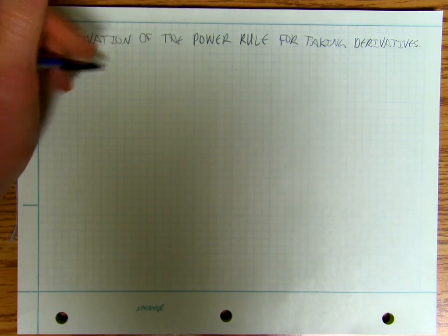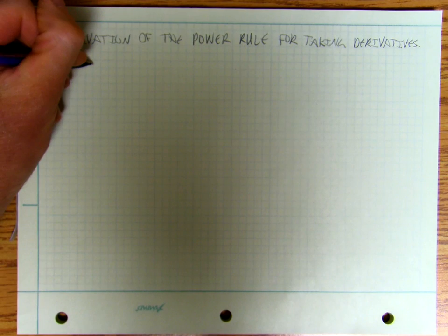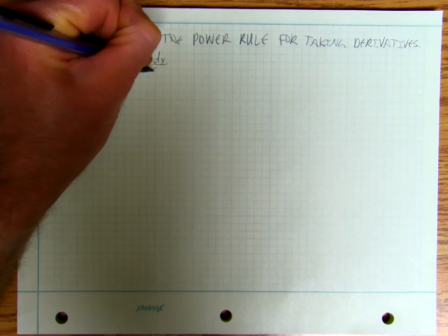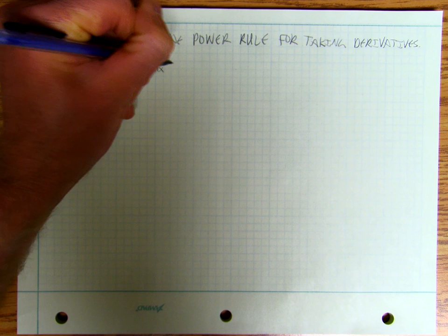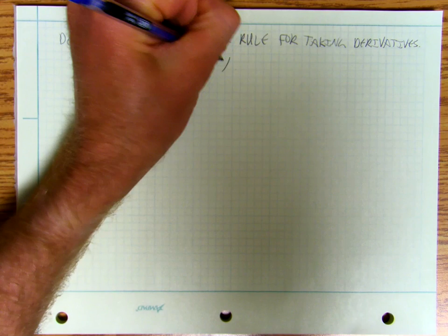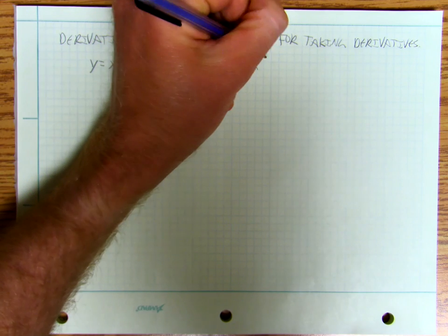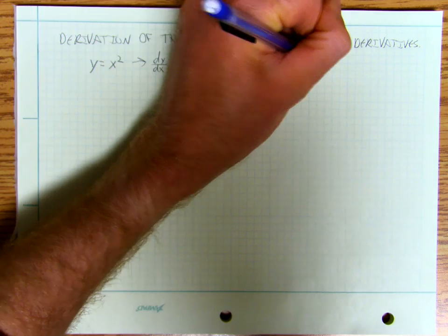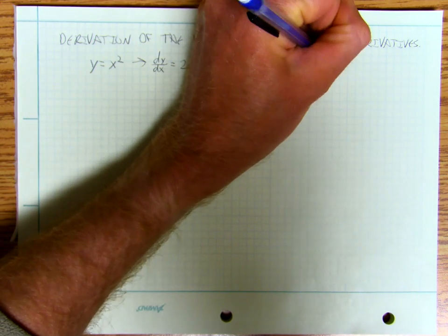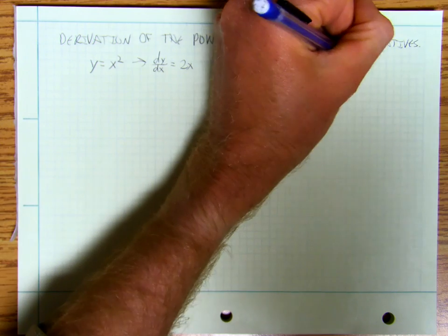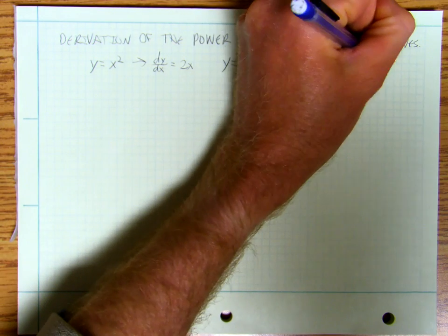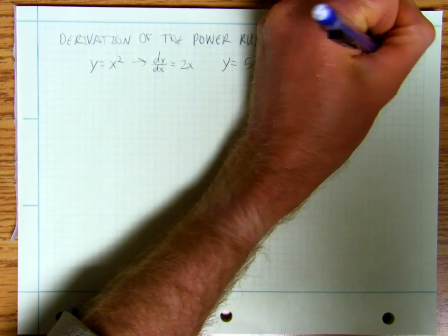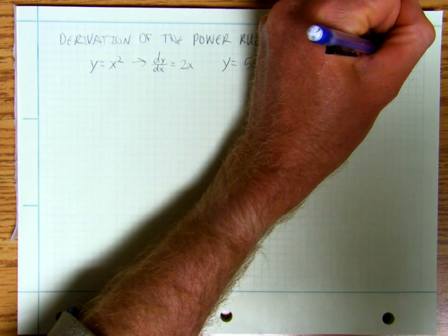By the time you're watching this video, you should know that if y equals x squared, then the derivative dy/dx is equal to 2x. And if y equals 5x to the fifth plus 3x to the seventh, then the derivative dy/dx, or y prime of x, is going to equal 25x to the fourth plus 21x to the sixth.